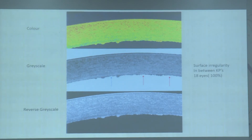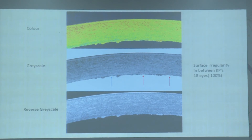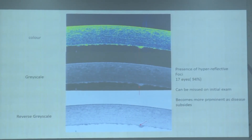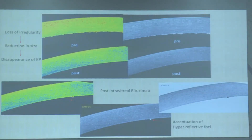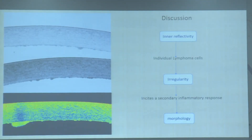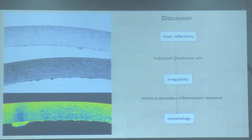All three color maps showed the morphology to be large and smooth in contour. The second finding was the intervening area, best studied by grayscale. This grayscale spider web pattern was seen in 100% of cases. Most importantly, hyperreflective foci were seen, best in the reverse grayscale. Pre and post treatment imaging showed the first to disappear was irregularity, while hyperreflective foci became accentuated on treatment with rituximab.